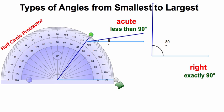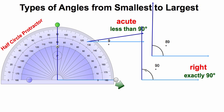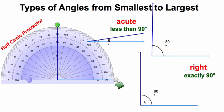Now a right angle, like we just talked about, has to be exactly 90. So there's no less than or more than — it has to be exactly 90 degrees. As we're going through the different types of angles, fifth graders, it would be a good idea to write in your notes the definitions for each one. For an acute angle, you would say less than 90. For a right angle, we would say exactly 90.